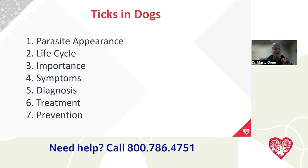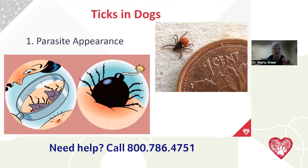Ticks are our next topic. Ticks are flat top to bottom, not side to side, and they don't have wings. They can be pretty small — sometimes requiring magnification to spot. People sometimes think their dog has a little wart and then realize it's a tick. Like fleas, they are not just icky — they carry disease as well. Tick appearances can be variable: there's the deer tick, the brown dog tick, the lone star tick, and others.